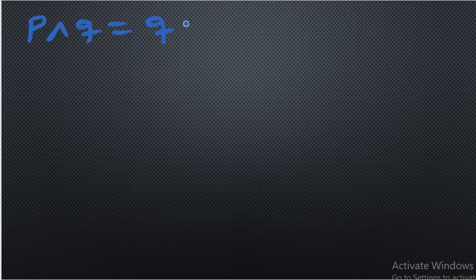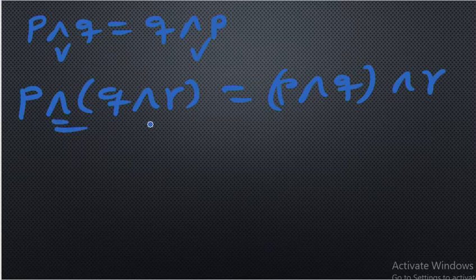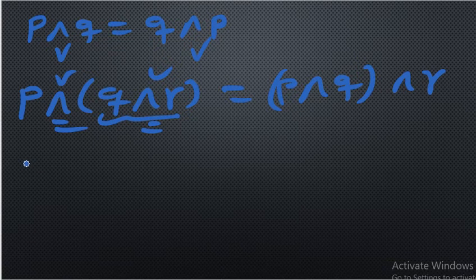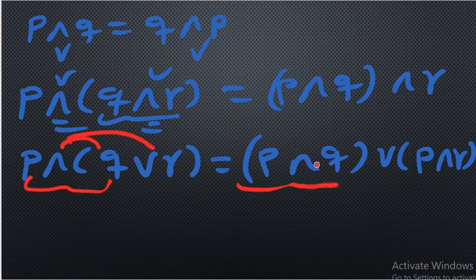In addition, there are some properties to remember. The commutative property: p and q is the same as q and p, and also for OR. The associative property: p and (q and r) is the same as (p and q) and r — you can change the bracket order, and it works for OR too. The distributive property: p and (q or r) is the same as (p and q) or (p and r).